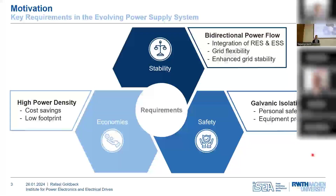There are a few key requirements that are becoming more and more important in the evolving power supply system: namely a high power density for economic reasons, galvanic isolation for safety purposes, and the ability to manage bidirectional power flow.